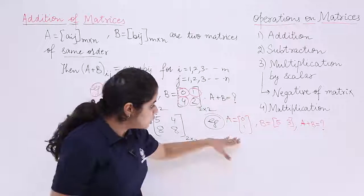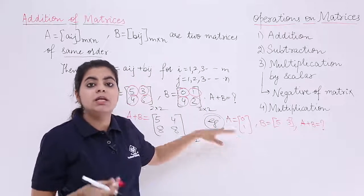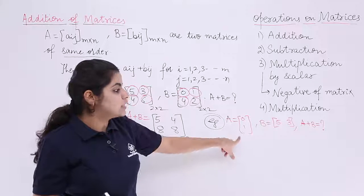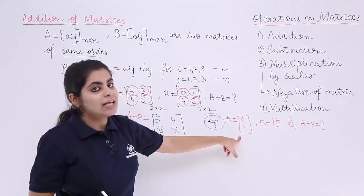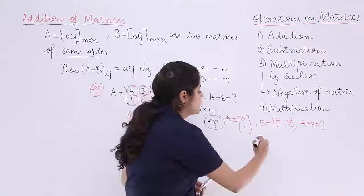Now first you have to check whether A plus B is possible or not. What is the order of the first matrix? It is 2 rows, 1 column, so it is 2 by 1.